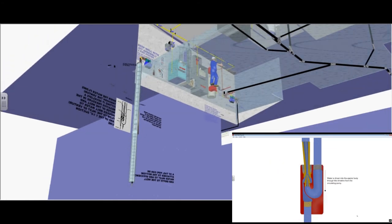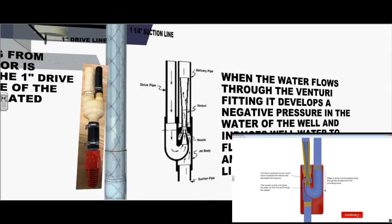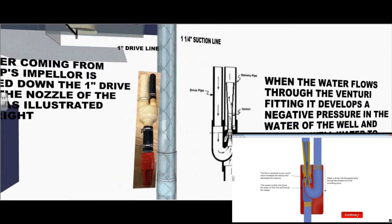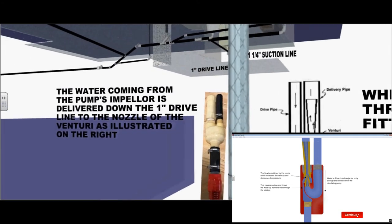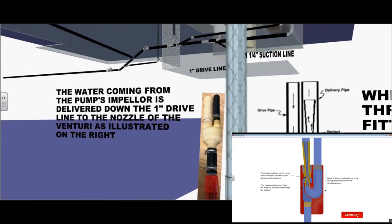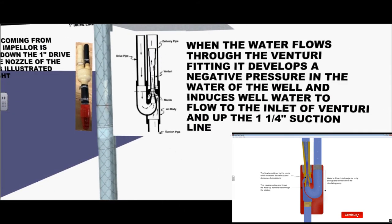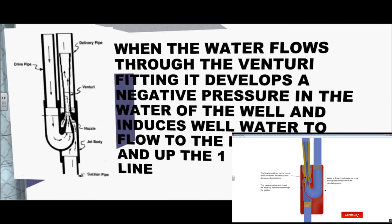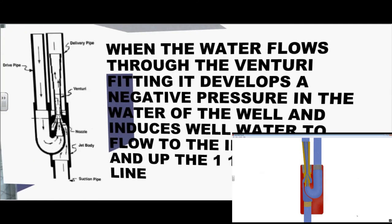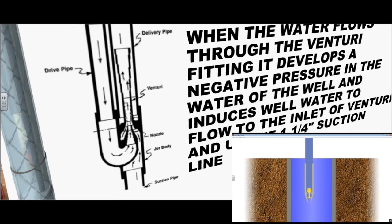Let's go further down the well and rotate around. We'll take a look at the jet assembly. The water coming from the pump's impeller is delivered down the one inch drive line to the nozzle of the venturi. When the water flows through the venturi fitting, it develops a negative pressure in the water of the well and induces well water to flow to the inlet of the venturi and up the inch and quarter suction pipe.